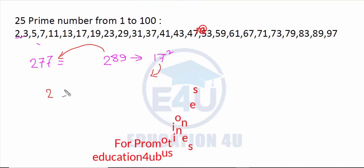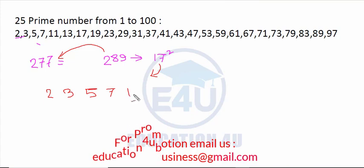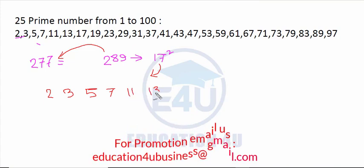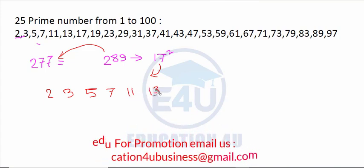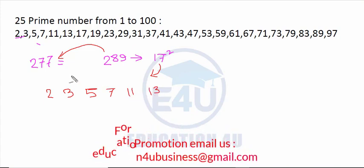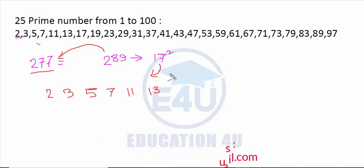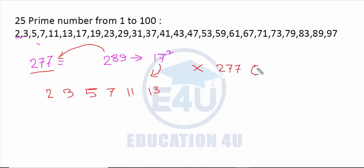For example, 2, 3, 5, 7, 13 — we will divide from 1 to 20 to identify prime numbers. If a number has no other factors, then it is a prime number.